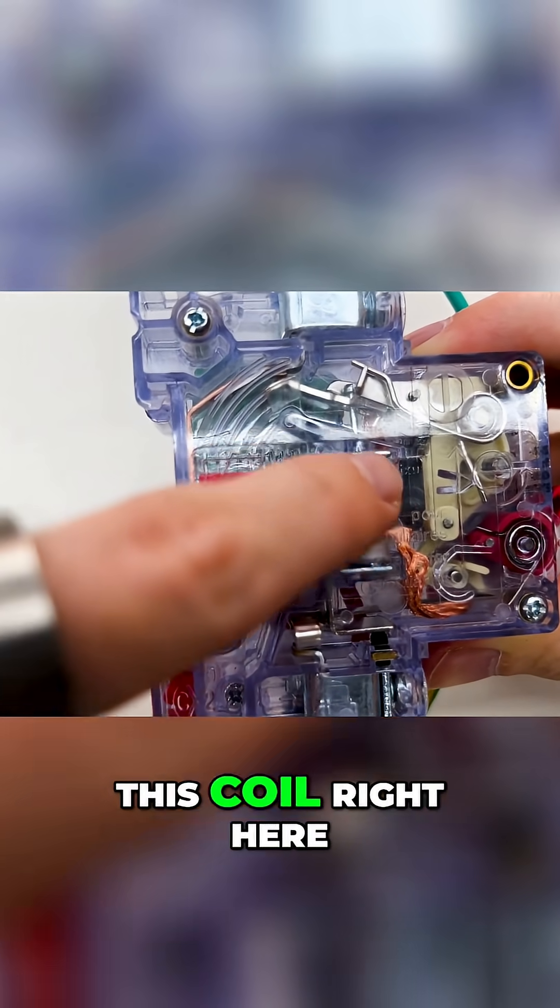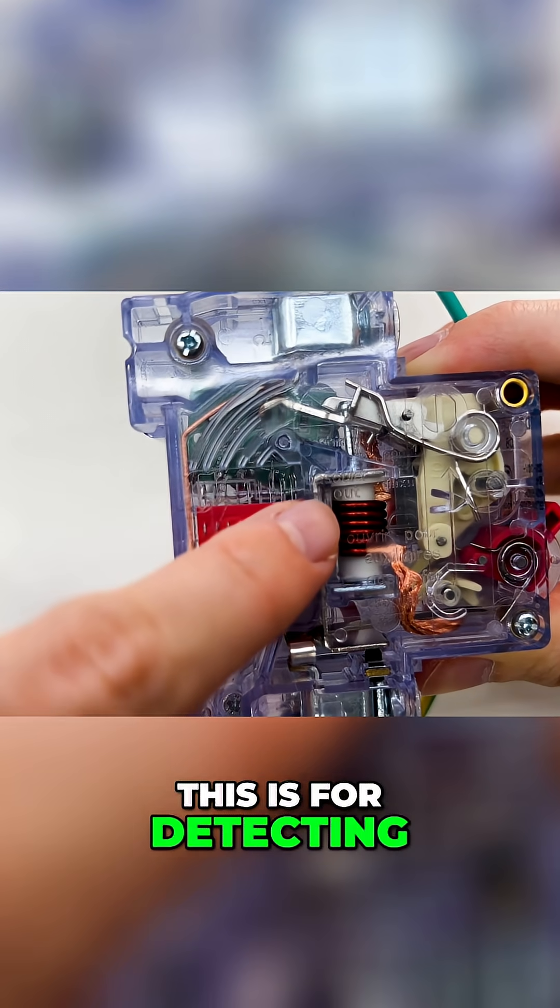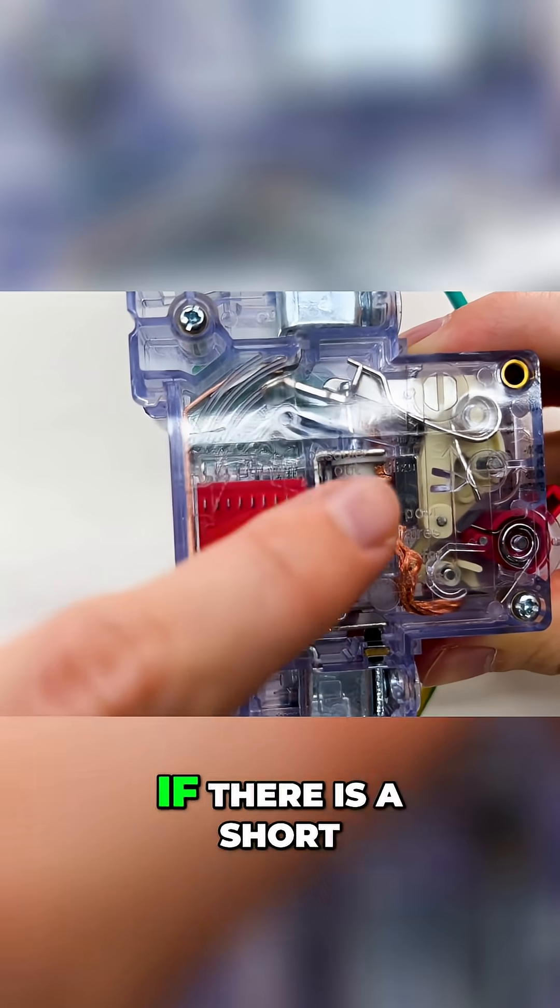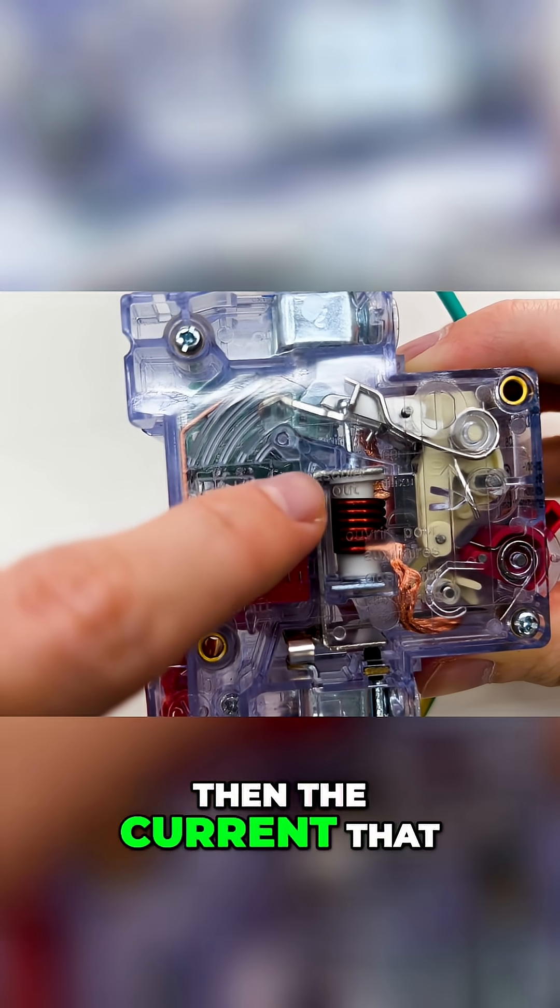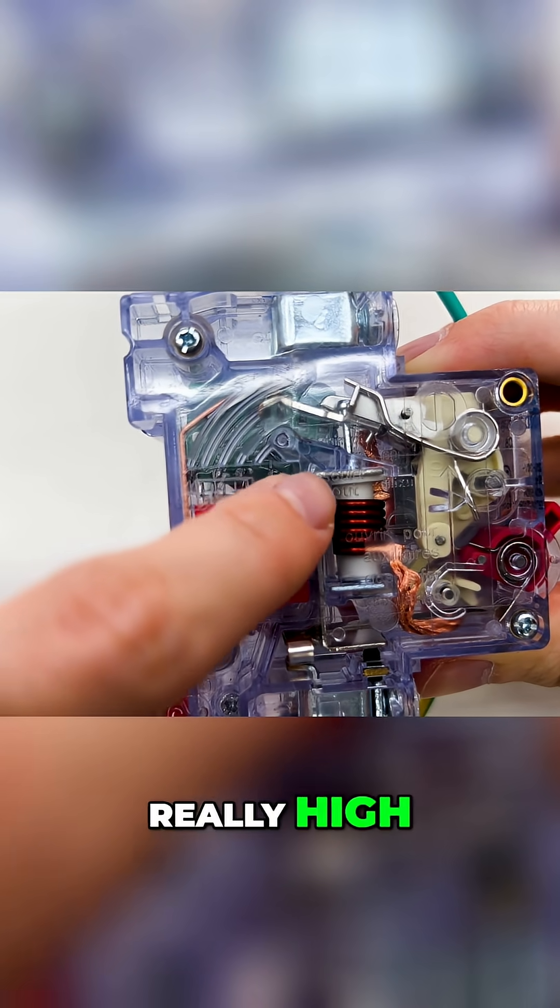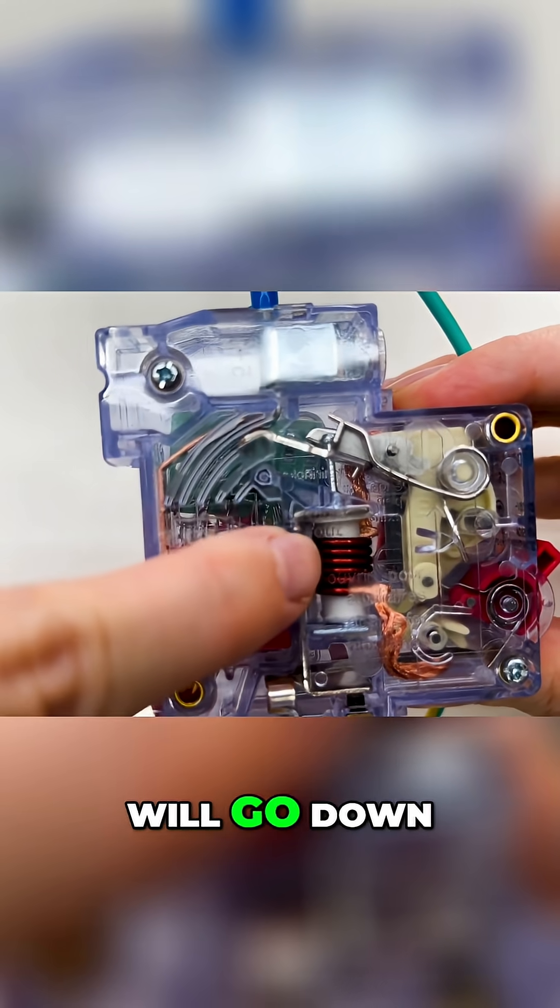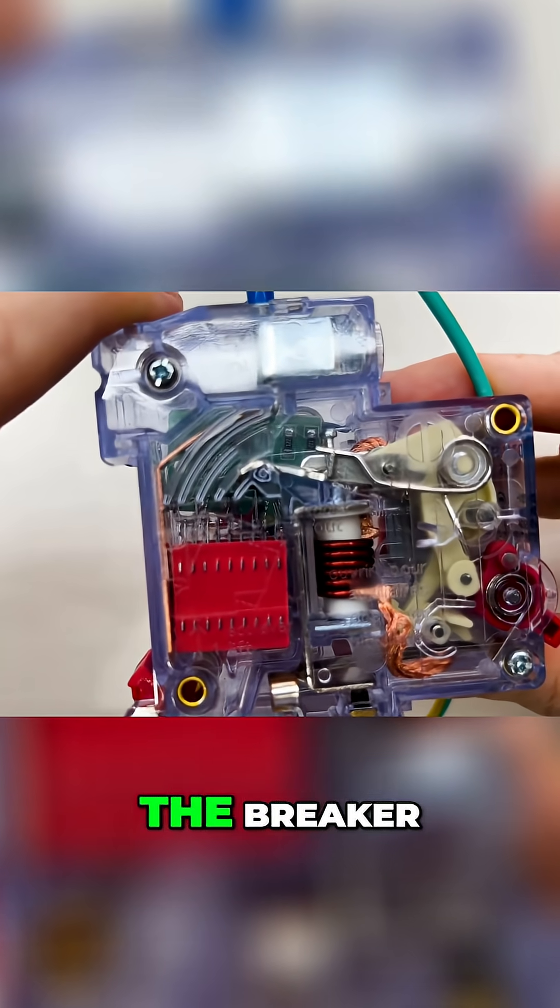But the second thing is this coil right here. This is for detecting short circuits. If there is a short, the current that will flow will be really high. This pin right here will go down and it will disable the breaker.